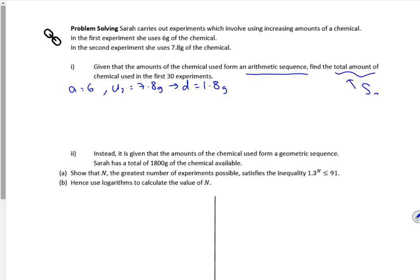So it's telling me I'll have the sum of the first 30 terms. Right then, so my sum formula is n over 2, 2a plus n minus 1d. So the sum of the first 30 is 30 over 2, 2 lots of 6, plus 30 take 1 is 29, lots of 1.8.